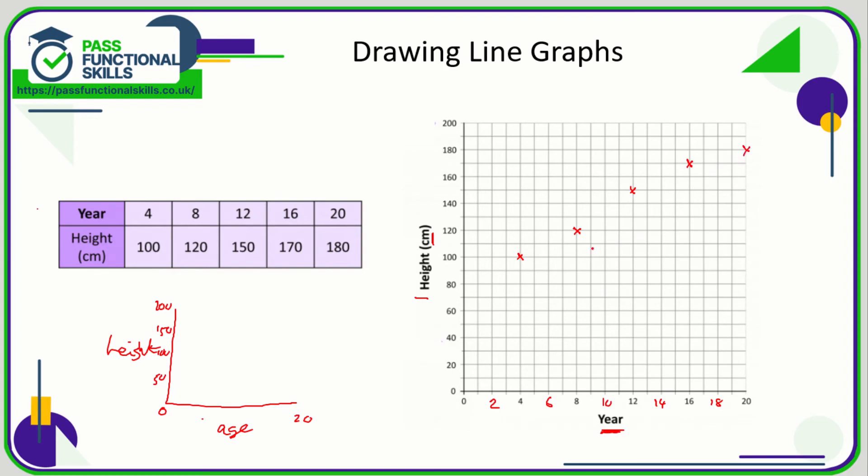Now to finish the line graph, all we have to do is draw a line from point to point. We are not doing a curve, we're not drawing a line of best fit or anything. We're going dot to dot or point to point. So our line graph when finished will look like this.